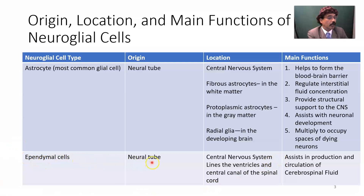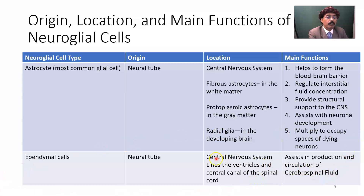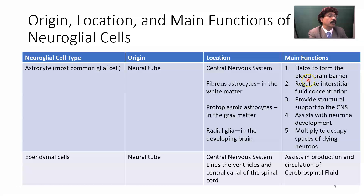Ependymal cells originate from the neural tube and are located in the central nervous system, lining the ventricles and central canal of the spinal cord. Their function is to assist in the production and circulation of cerebrospinal fluid. Special emphasis: the astrocyte forms the blood-brain barrier — the foot processes of the astrocyte along with the tight junctions between endothelial cells form the blood-brain barrier.